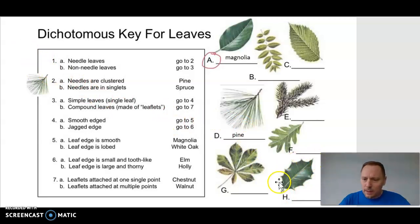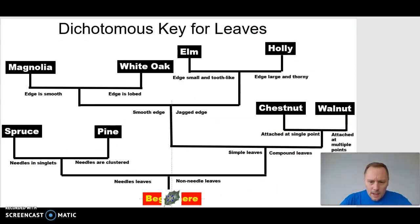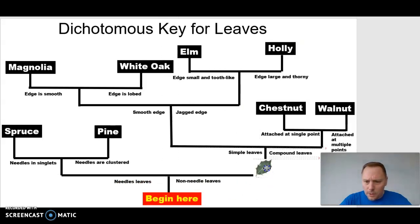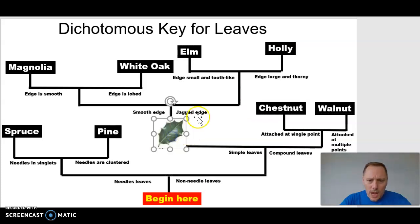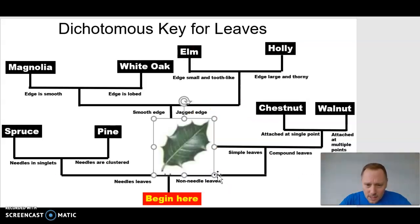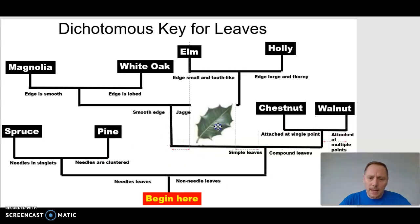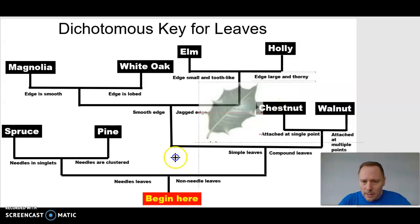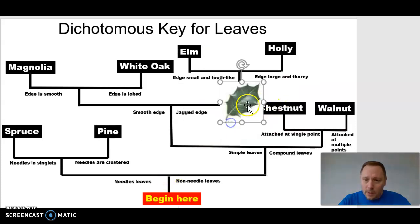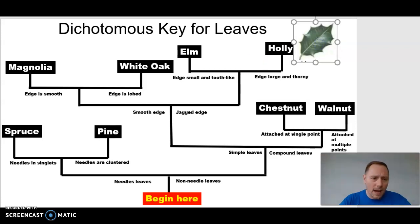Mysterious leaf H — let's do one more together. Begin here: needled or non-needled? Non-needled. Next choice: simple leaf or compound? Simple, take a left. Smooth-edged or jagged-edged? That is a jagged-edged leaf, so we take a right. We reach our final choice of two: edge small and tooth-like, or edge large and thorny? That is large and thorny — this is the holly.